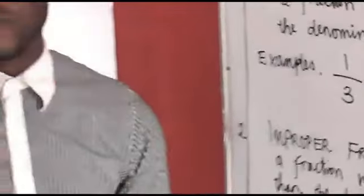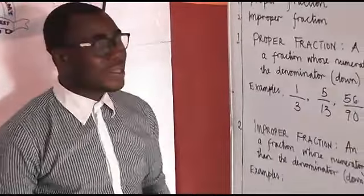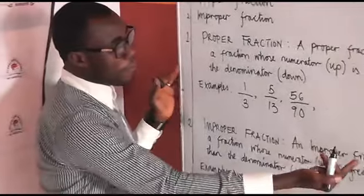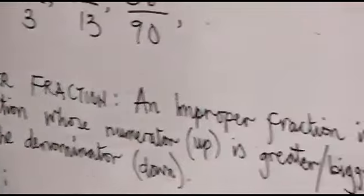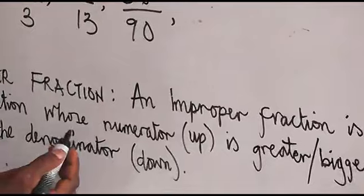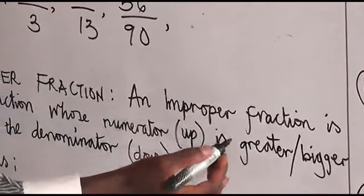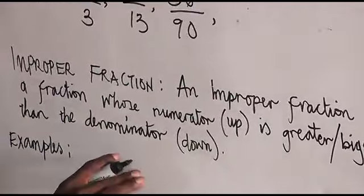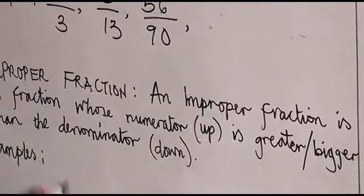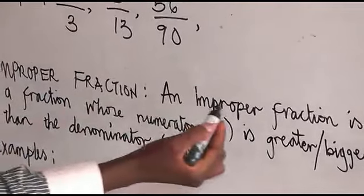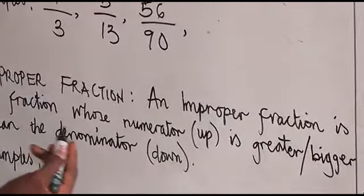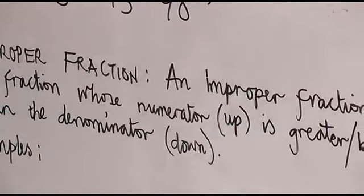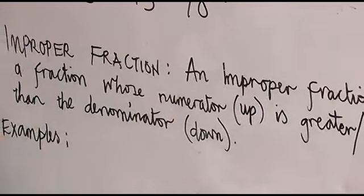Now let's move to improper fraction. An improper fraction is a fraction whose numerator is greater or bigger than the denominator. Again, an improper fraction is a fraction whose numerator is greater or bigger than the denominator.